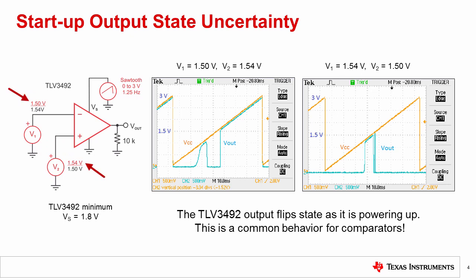For the first case, shown in red, the voltage on the non-inverting input is greater than the voltage on the inverting input, so the output should be a logic high. We see that as the supply voltage ramps from 0 volts to 3 volts, the output actually flips state from logic low to logic high and back to logic low before stabilizing at logic high once the supply reaches 1.5 volts.